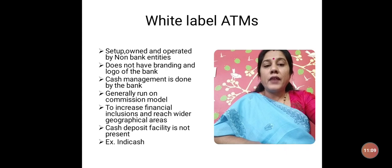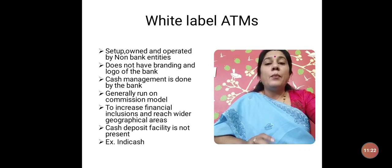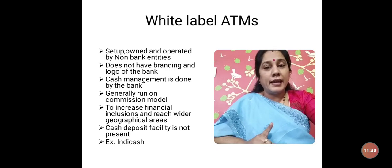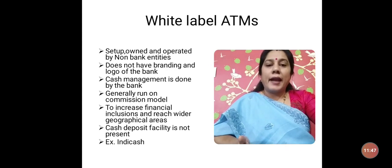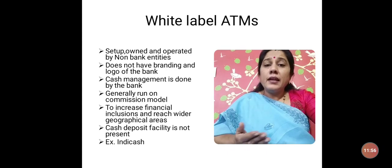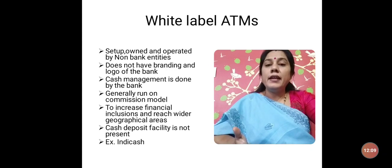These ATMs increase financial inclusion. When RBI gives license to NBFCs, it includes a clause that a fixed number of ATMs must also be started in Tier 3 and Tier 4 regions, covering rural areas, Taluks, and Hobleys. So white label ATMs are also operational in these regions, helping more people carry on banking activities and reaching wider geographical areas. Cash withdrawals can be made, but cash deposit facility is not present. The best example of a white label ATM is IndyCash.